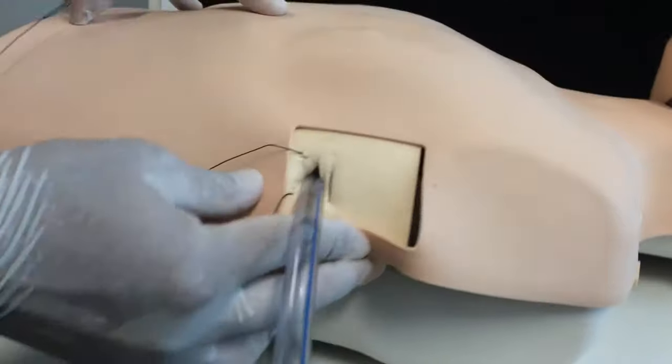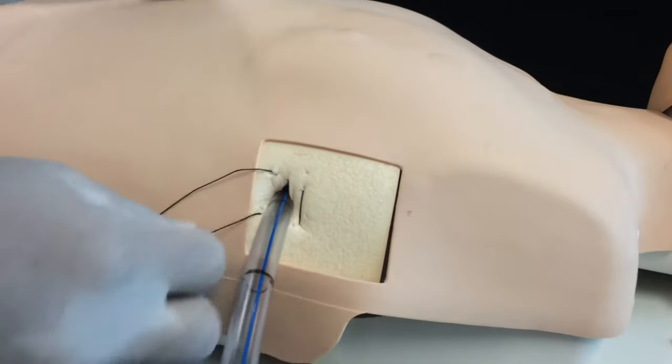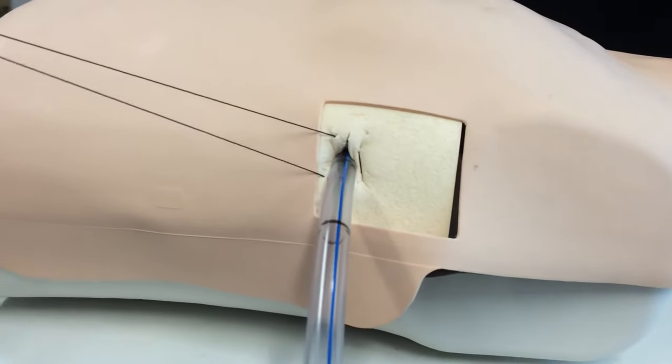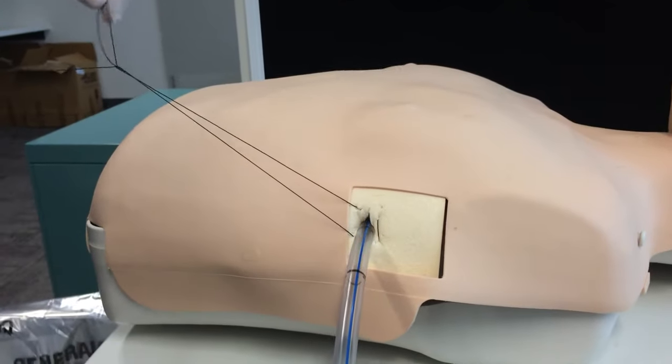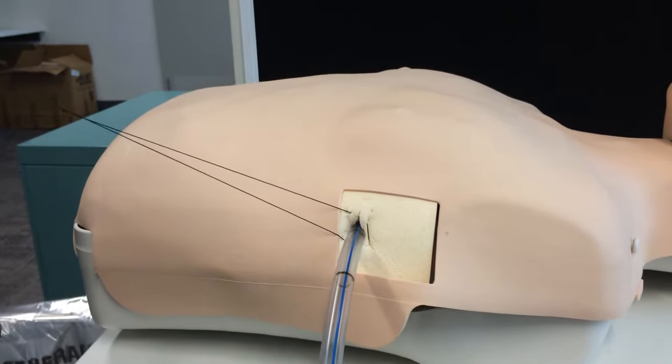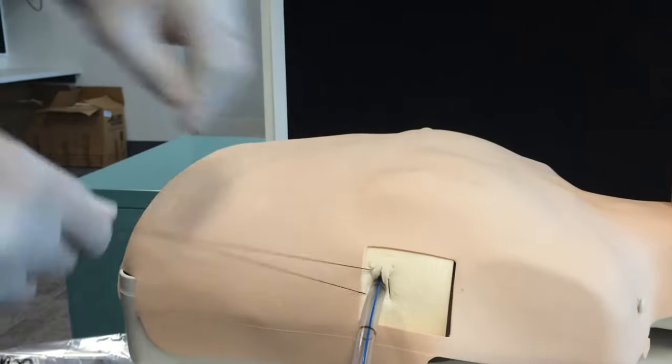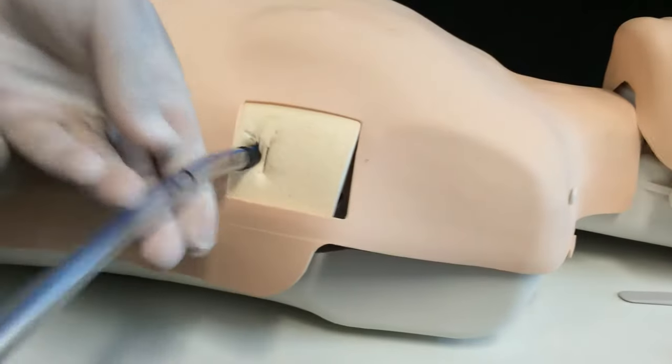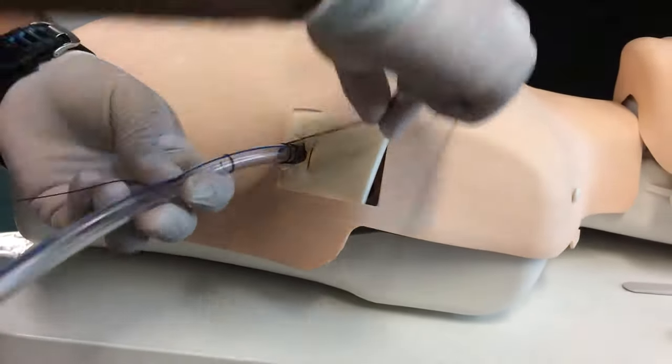So I put a horizontal mattress suturing and gone through over and around, and what you do is then you secure the knot in. You wrap this tightly around the drain until the knot is at the drain.